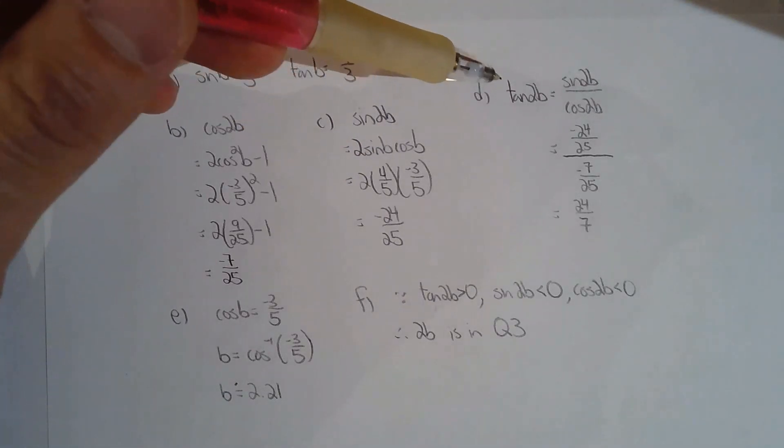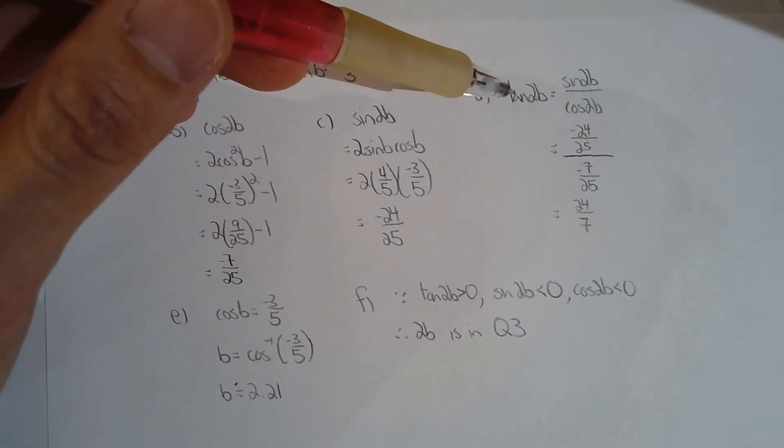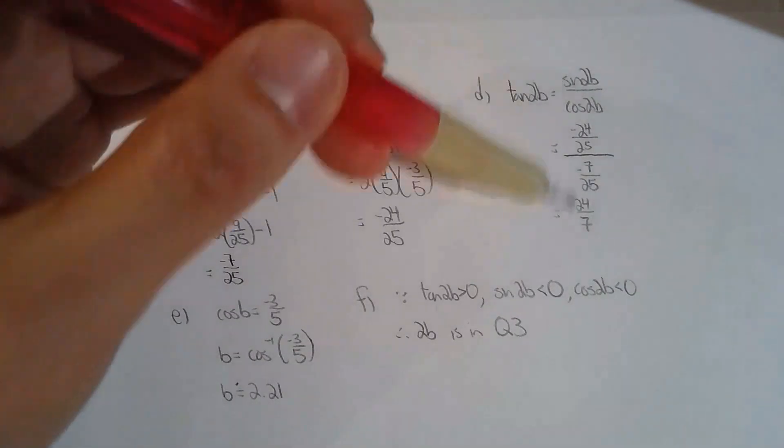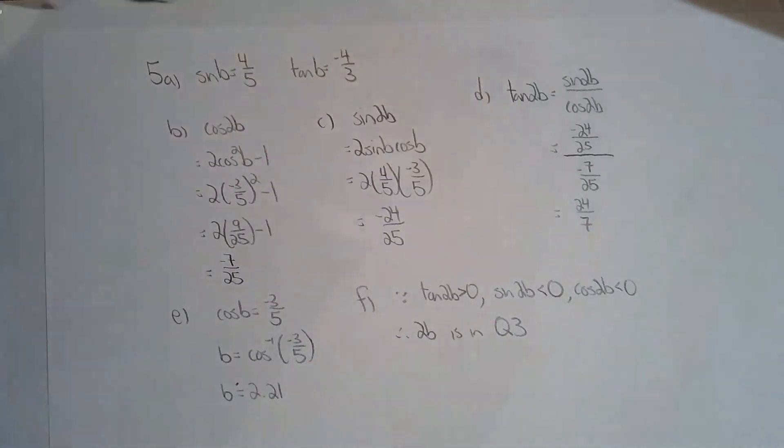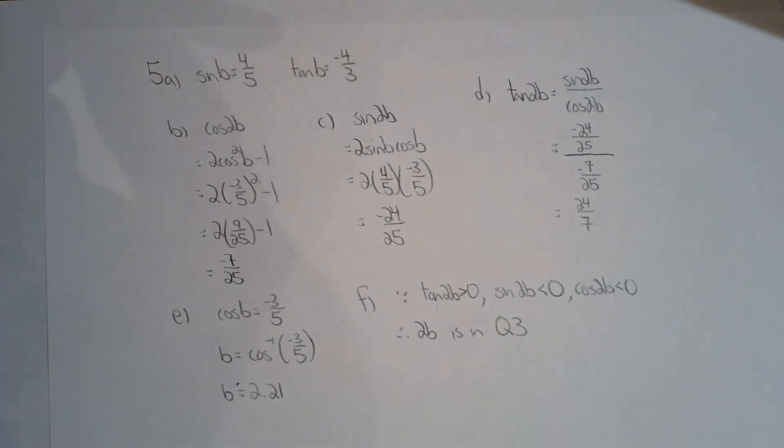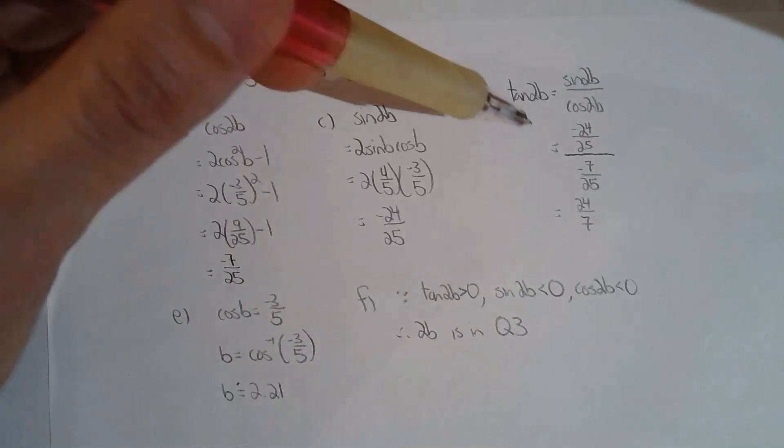Now tan two b, for five d, I chose to use the quotient identity, but you could have used a double angle formula for tan if you wanted. So two tan x over one minus tan squared x, which is very easy to do because you know what tan b, sorry, I should say tan two b is two tan b over one minus tan squared b. And that's very easy to find out the exact answer for because I know what tan b is, it's negative four thirds. But I would argue this calculation, what I've shown here using the quotient identity is much easier. But you can only use this technique or this strategy if you know what sine two b and cos two b is. So if I didn't do part b or part c, then I can't do part d this way.